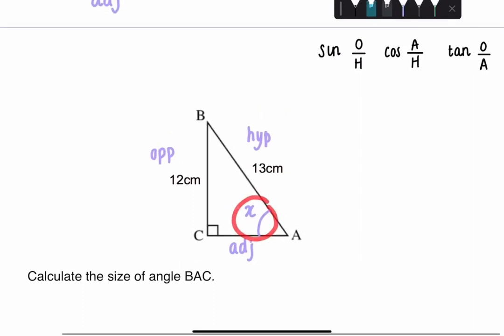So now to find X, all you have to do is look at the information that they give you. They give you the opposite side and the hypotenuse. Which one of these trig functions uses O and H? It's sine. So this is the one that we use.